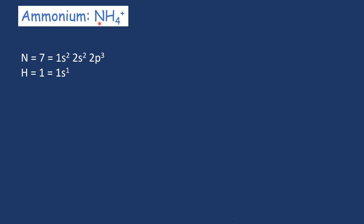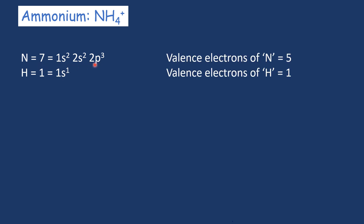We have one nitrogen and four hydrogen atoms. Nitrogen's atomic number is 7, with electronic configuration 1s2, 2s2, 2p3. Hydrogen's atomic number is 1, with electronic configuration 1s1. Nitrogen has 5 valence electrons and hydrogen has 1 valence electron.